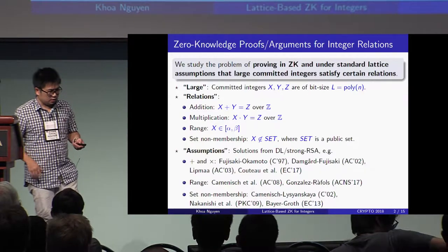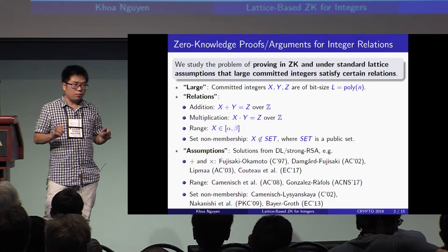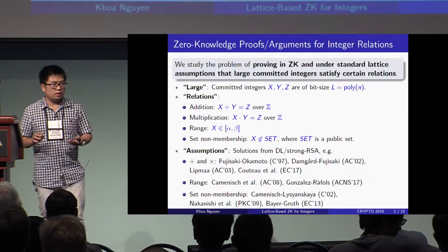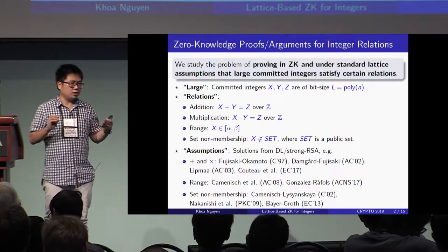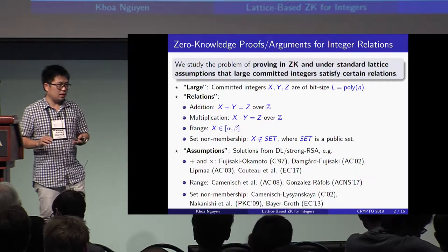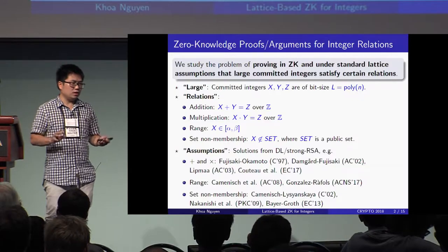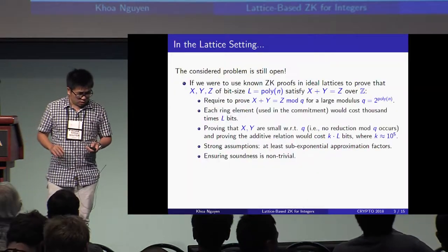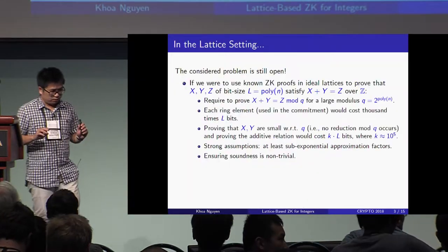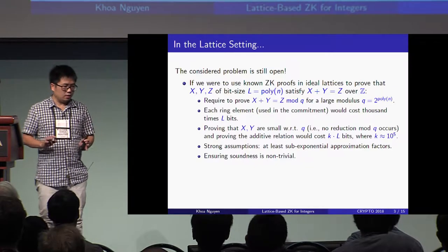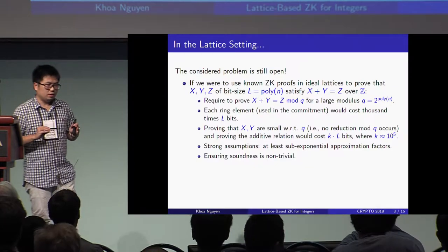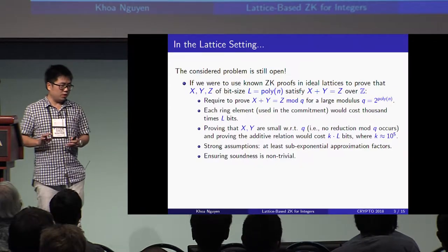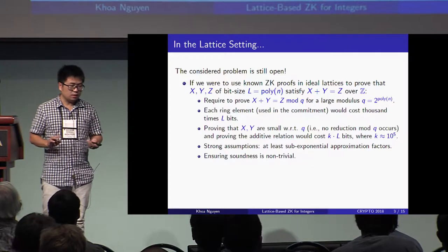So it's reasonable to investigate the problem based on alternate assumptions that are quantum-resistant, for example, lattices. Let me consider the problem in the lattice setting. In this setting, however, the problem is still open.